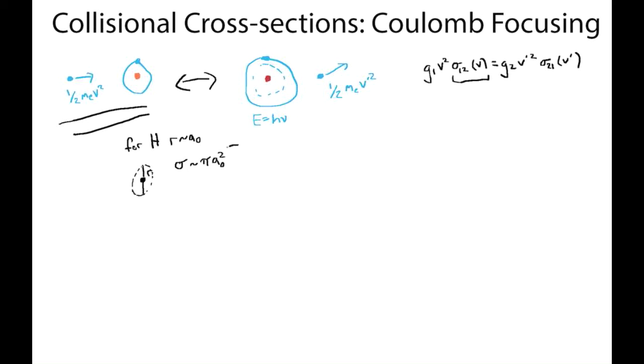But it turns out we're missing a factor here, which has to do with Coulomb focusing. Coulomb focusing is the idea that we're not just throwing a marble at this atom here. We're throwing a charged particle. This is an electron. And in some sense, this electron is kind of like a homing missile in that it's being attracted toward the nucleus of this atom.